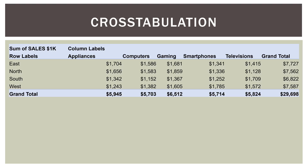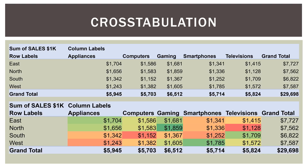We can use Excel's conditional formatting feature to colorize each cell. Green represents the highest sales and red the lowest. The gaming segment in the north region had the highest sales at $1.859 million. In dark red, televisions in the north had $1.128 million of sales. With just one or two clicks in Excel, conditional formatting shows where the best and worst sales occurred based on the intersection of region and segment.